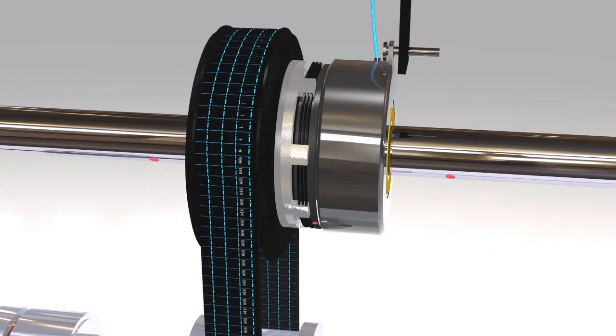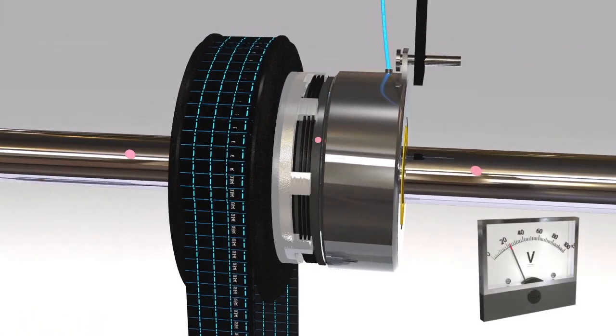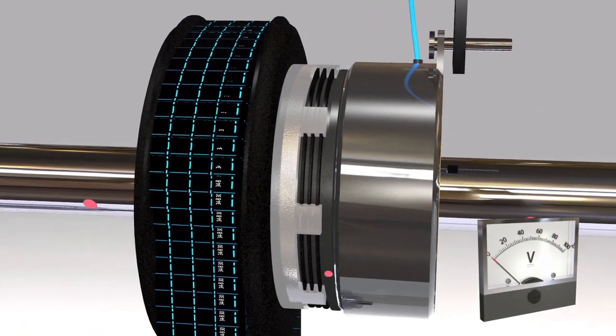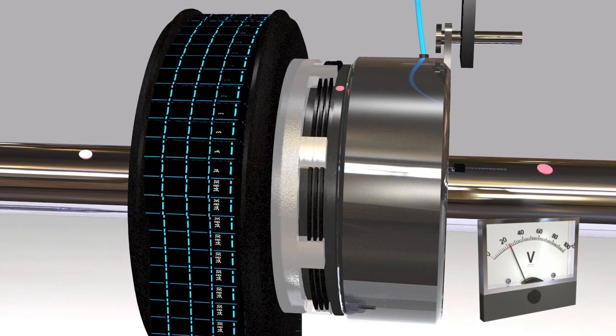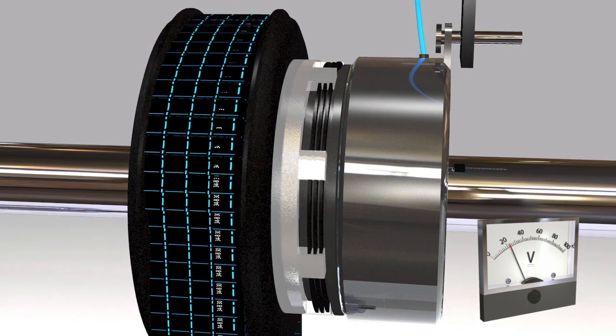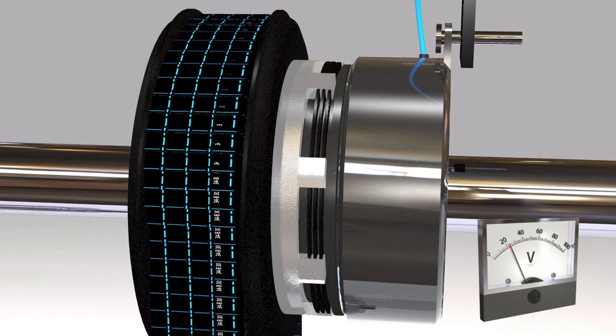To disengage the clutch, current voltage is removed and the separator wave springs prevent the inner and outer discs from making contact. But there is still a minimal amount of drag present from the separator springs.